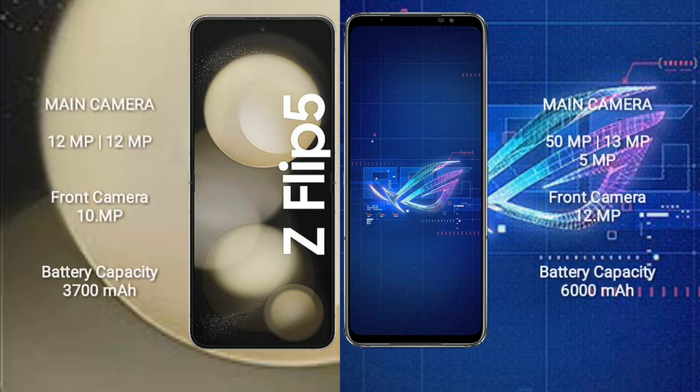Samsung Galaxy Z Flip 5 has a dual camera setup: 12 megapixel plus 12 megapixel rear cameras, and a 10 megapixel front camera. Asus ROG Phone 6 comes with a triple camera setup: 50 megapixel plus 13 megapixel plus 5 megapixel rear cameras, and a 12 megapixel front camera. Samsung Galaxy Z Flip 5 has a 3700 mAh battery with 25-watt fast charging support.